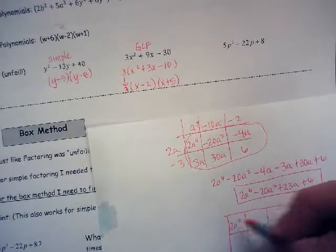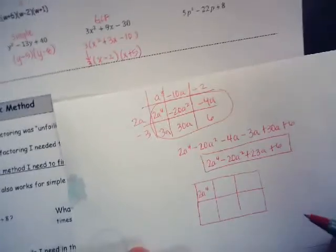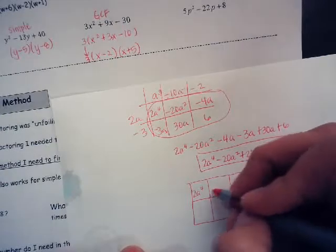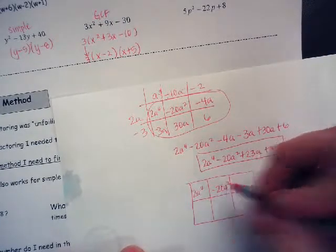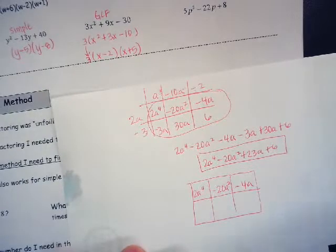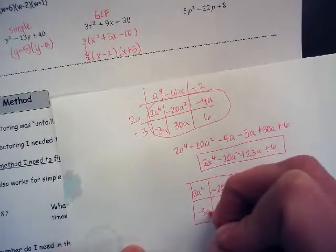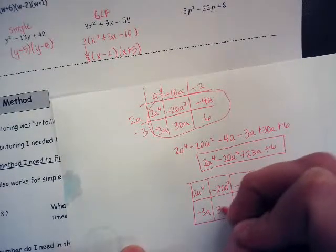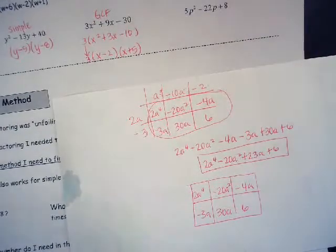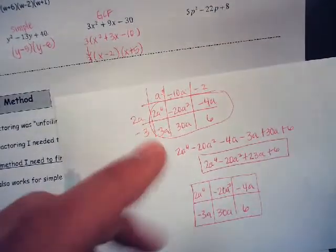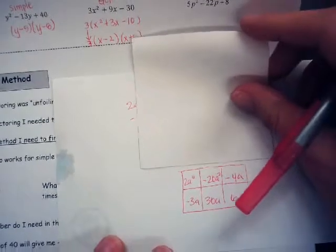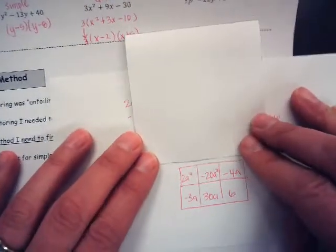I have 2a to the fourth, minus 20a squared — it was worth it to dig in the trash for this — minus 4a, minus 3a, 30a, and 6. That was what was in this box right here. I'm going to cover up some of this extra work so I don't confuse you. Let's say I had all that information but needed to find out the factors that went on the outside.